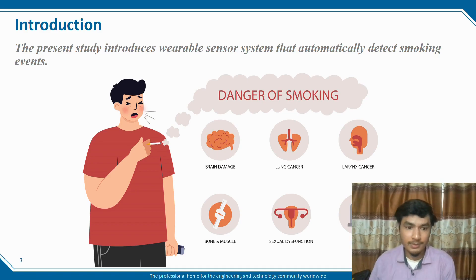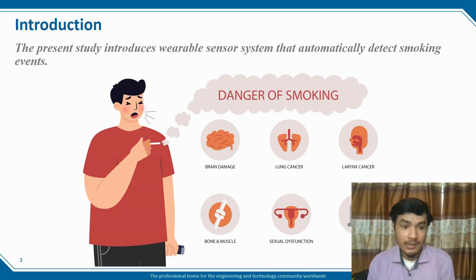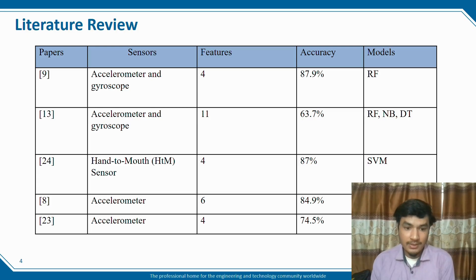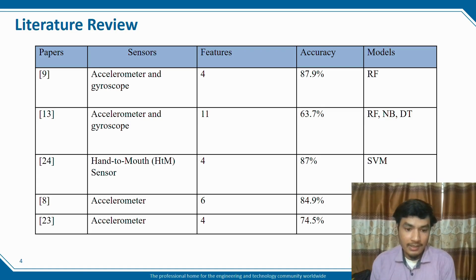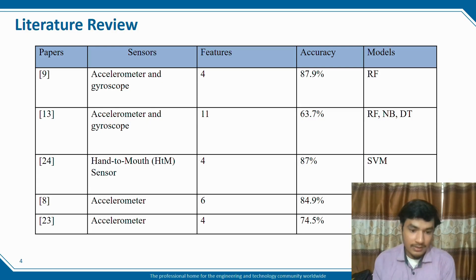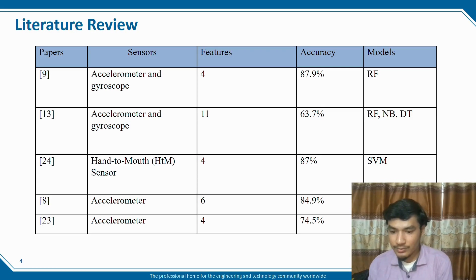In the literature review: Paper 9 used accelerometer and gyroscope sensors with 11 features, achieving 87.9% accuracy using RF, NB, and DT models. Paper 13 used accelerometer and gyroscope with 11 features, achieving 63.7% accuracy with RF, NB, and DT. Paper 24 used a hand-to-mouth HTM sensor with 4 features, achieving 87.7% accuracy using SVM. Paper 8 used accelerometer with 6 features, achieving 84.9% accuracy using KNN. Paper 23 used accelerometer with 4 features, achieving 74.5% accuracy using RF and SVM.